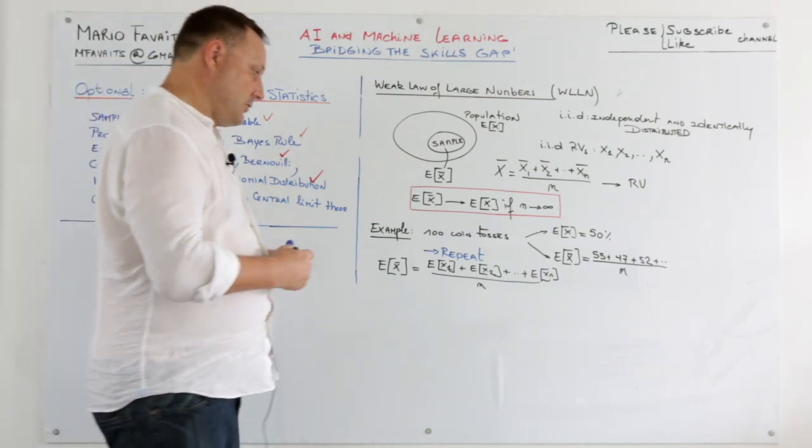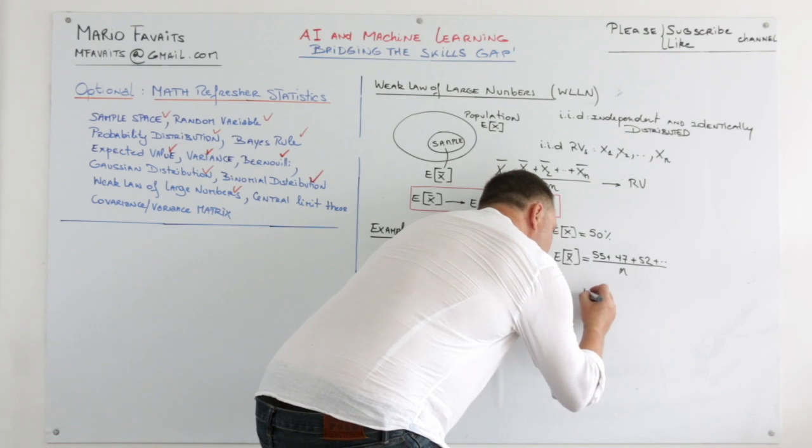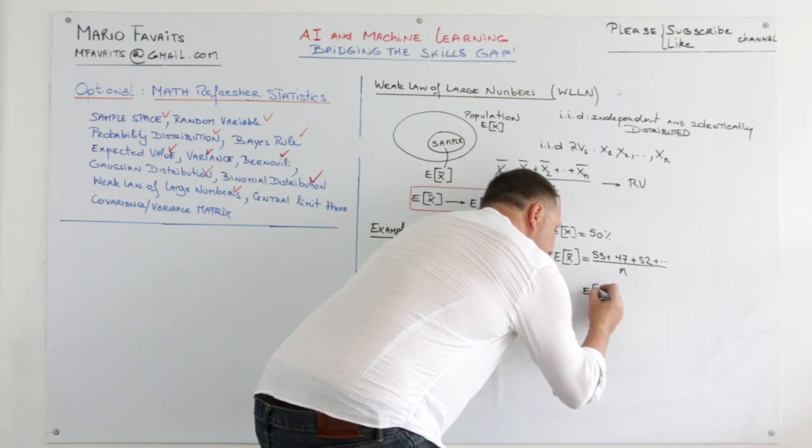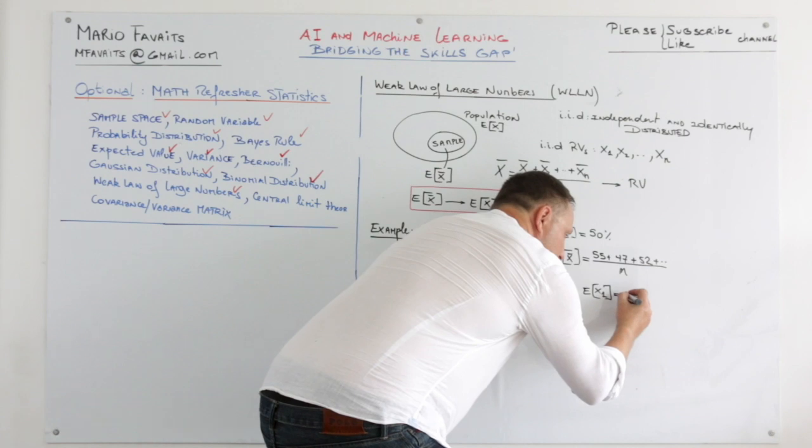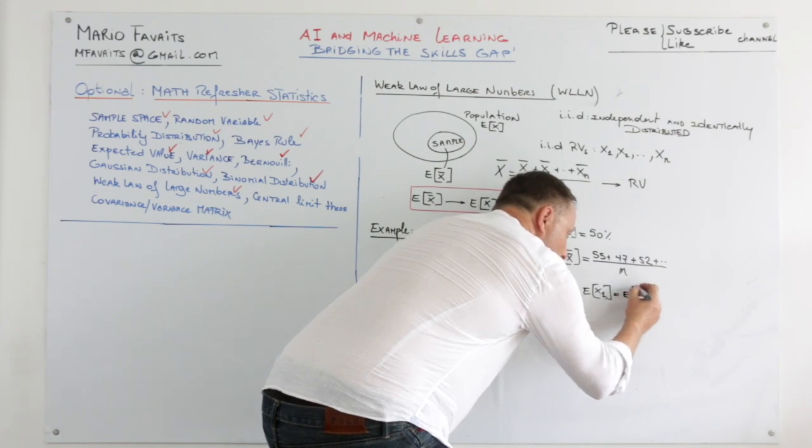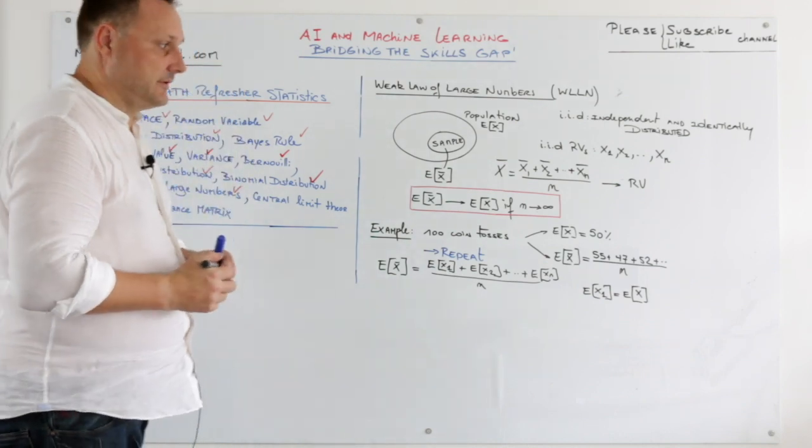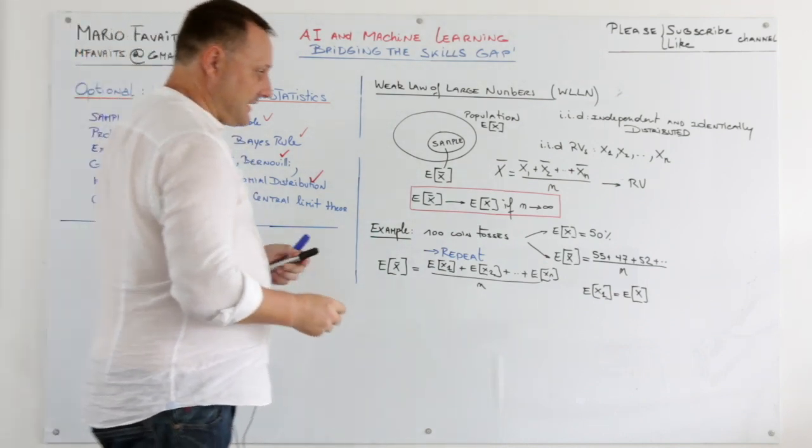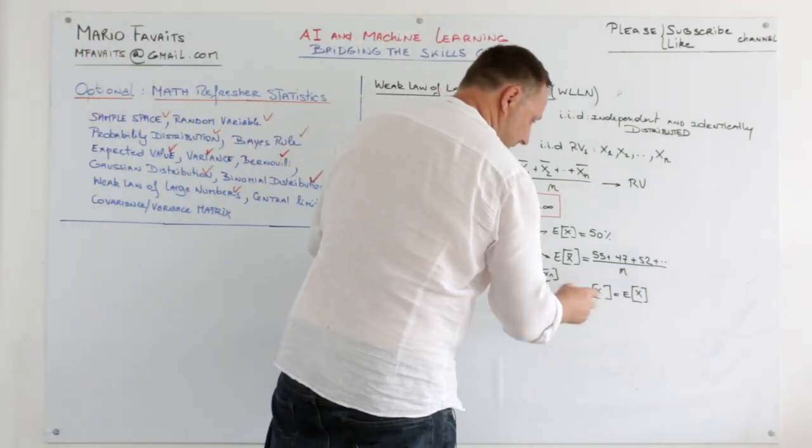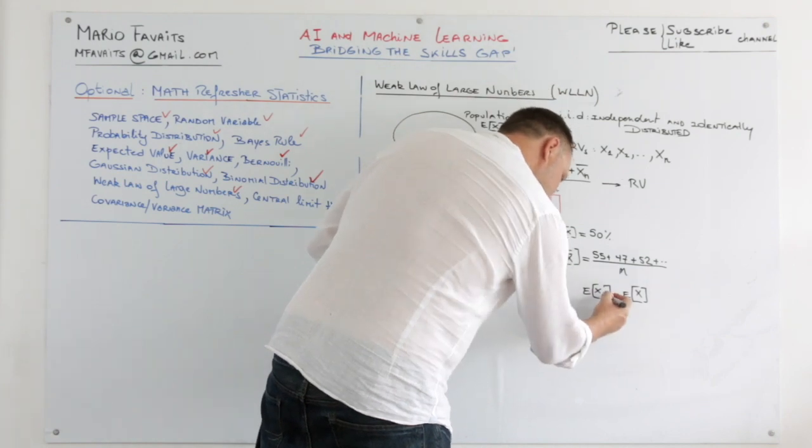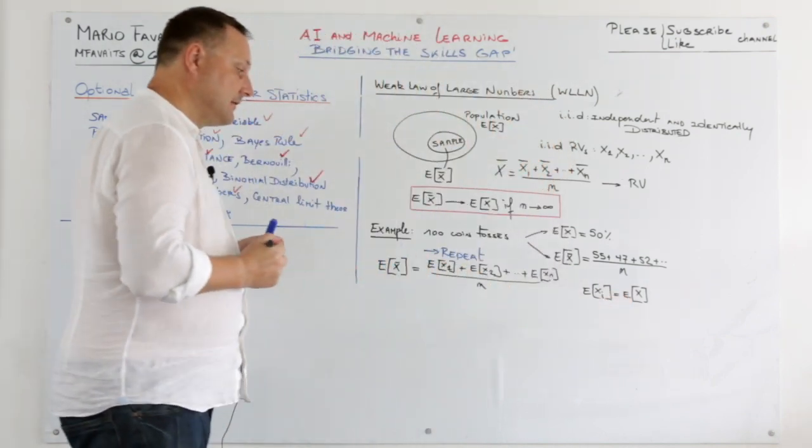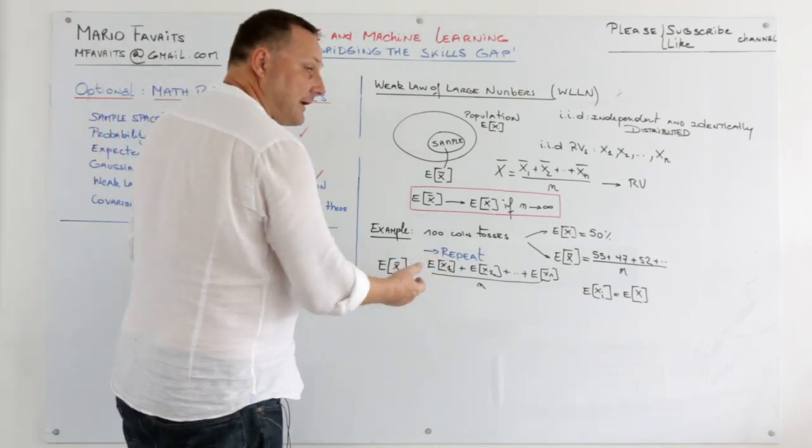Now the expected value of X1 is actually the expected value of X. So actually I can change the 1 by i. So that's the same thing.